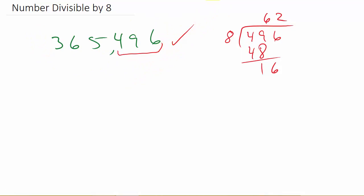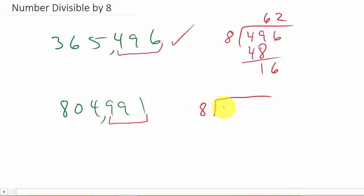So let's look at another one. So we have 804,991. So first we just take the last three digits and see if 8 divides into that evenly. So let's take a look.